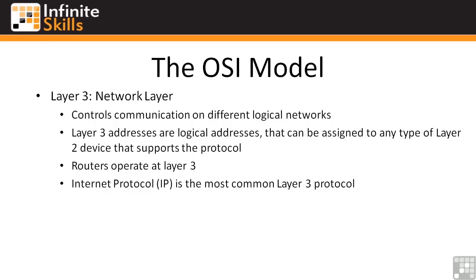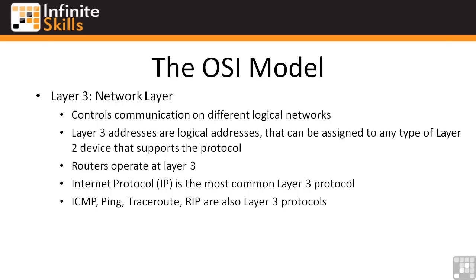Whether it's IPv4 or IPv6 — and we won't really get into IPv6 in this course — both of those are Layer 3 protocols. The types of applications you'll see running at Layer 3 are ICMP, Ping, Traceroute, and RIP, because all of those really only care about getting data to the remote network.